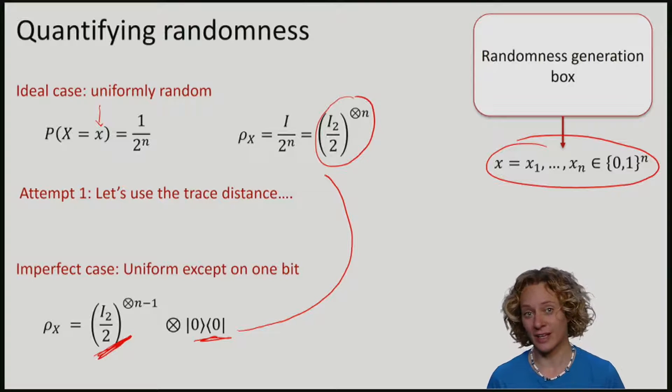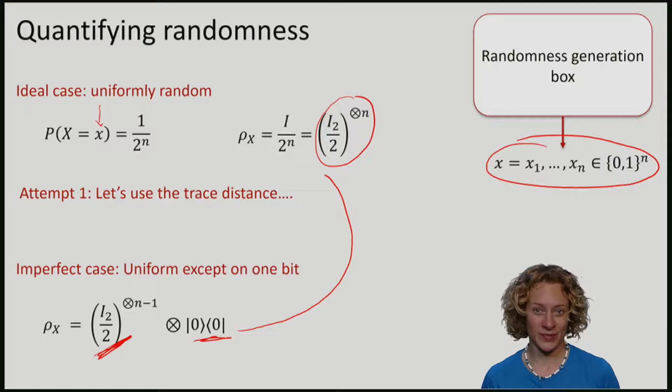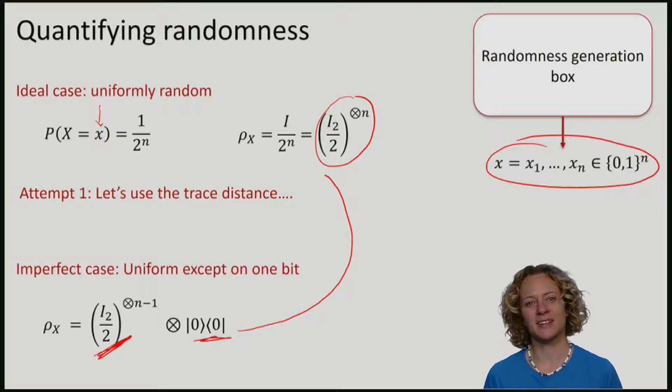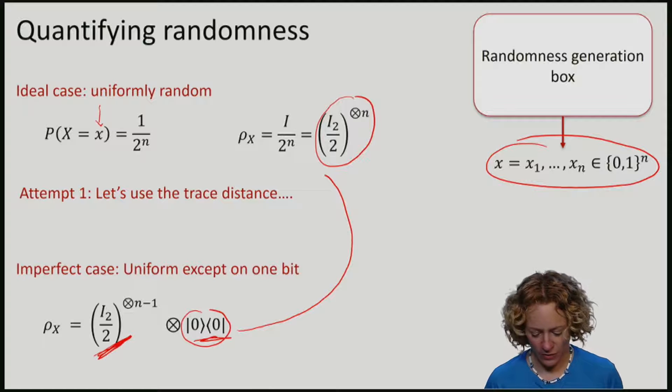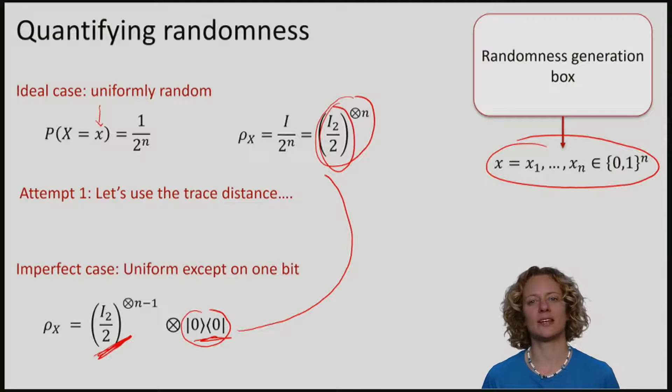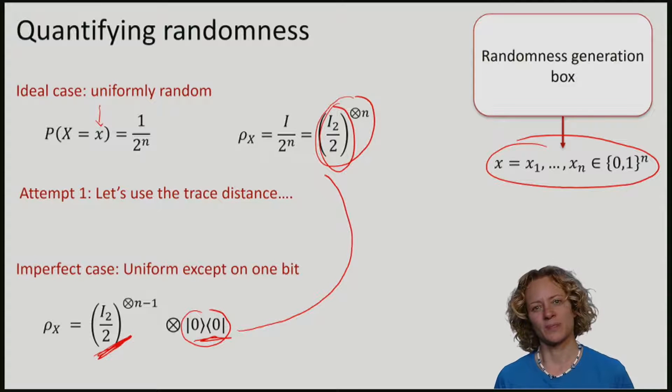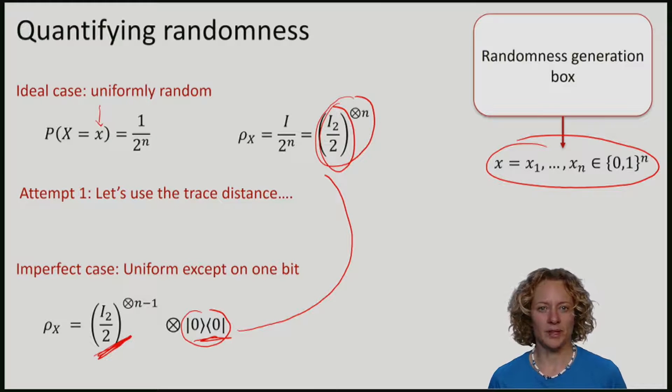However, in this case, we are not quite so close. If you remember the example for the trace distance, to distinguish the zero state from the maximally mixed state on one qubit, the trace distance was pretty large. So we can distinguish these two situations very well. If we cannot use the trace distance as a measure to quantify approximate randomness, what other measures might there be?